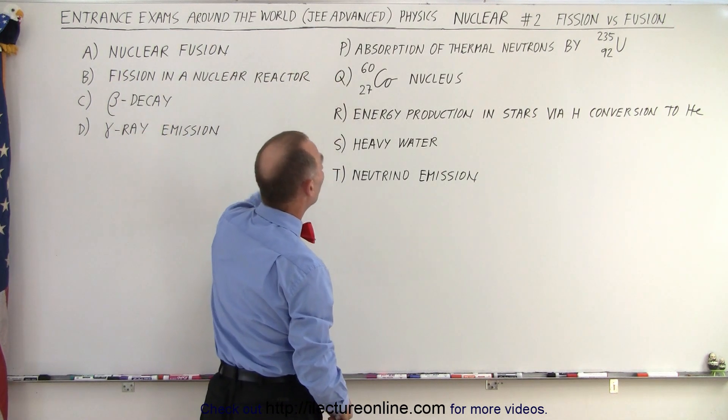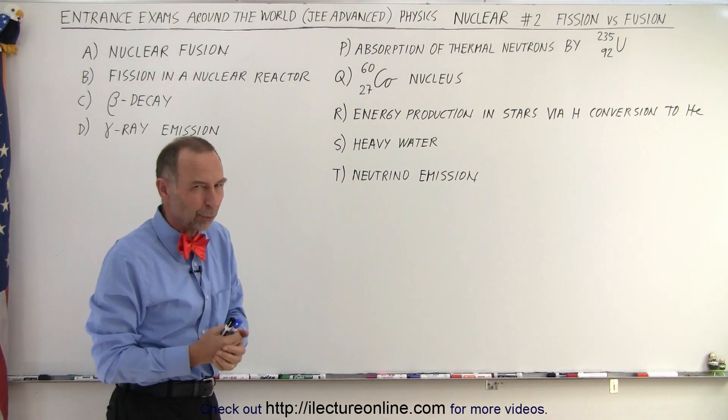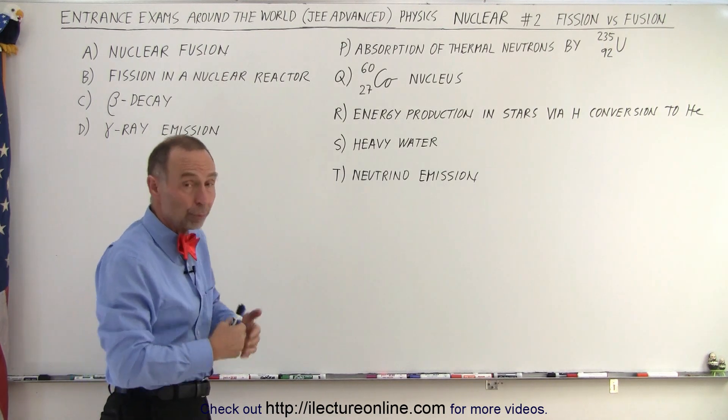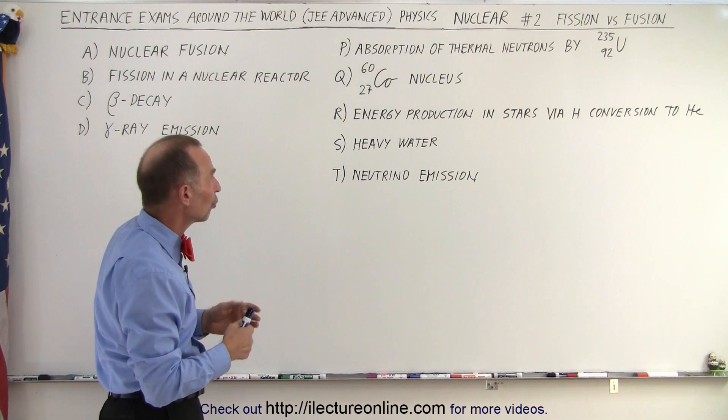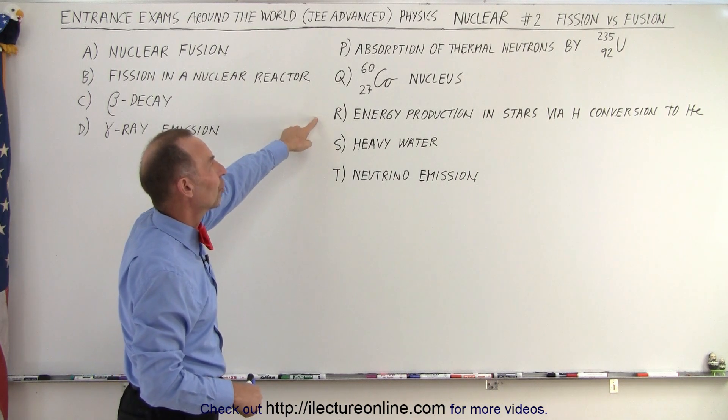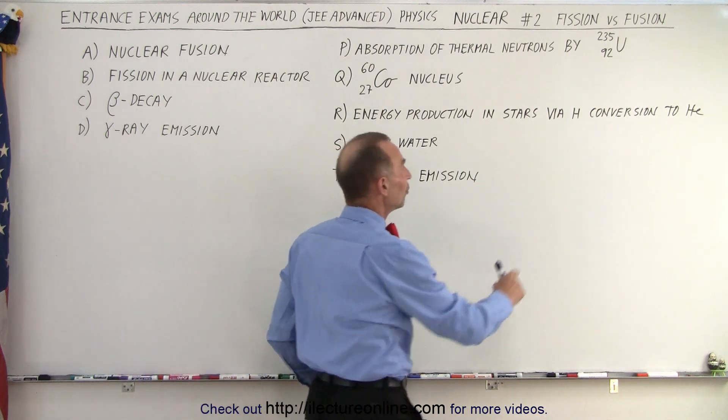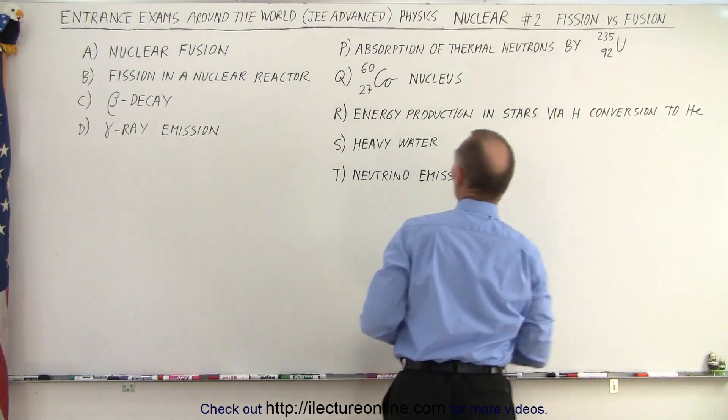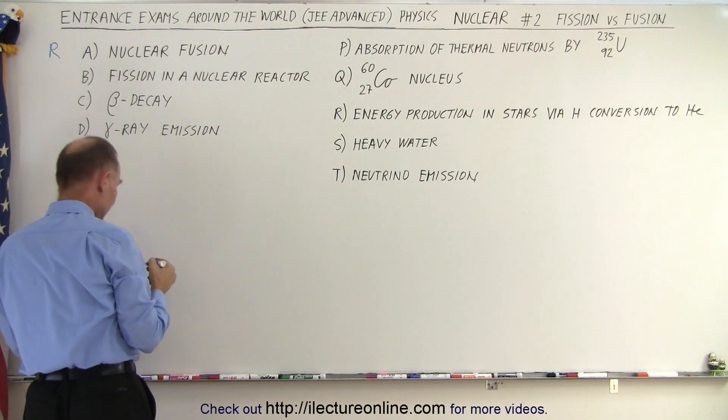How about cobalt nucleus? We cannot fuse cobalt-60 into heavy elements. That requires a supernova explosion. That's something we don't see typically in any sort of nuclear reaction. How about energy production in stars via hydrogen conversion to helium? Now, that's fusion. We're fusing hydrogen into helium, which means that R is an appropriate statement for A.